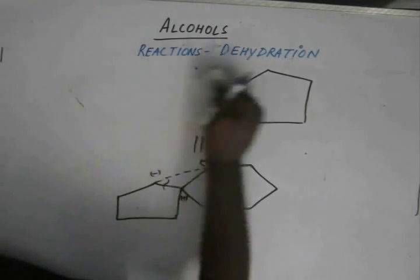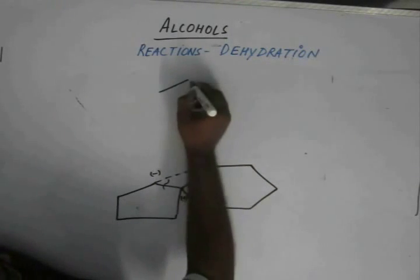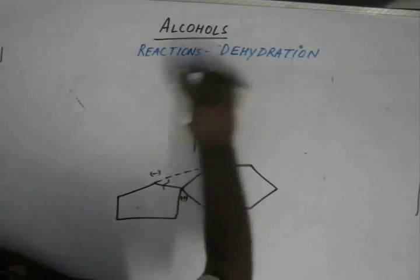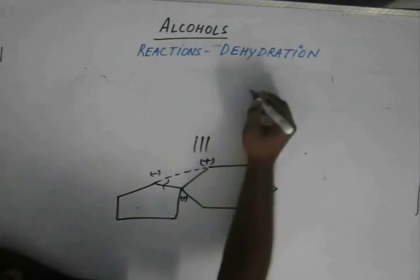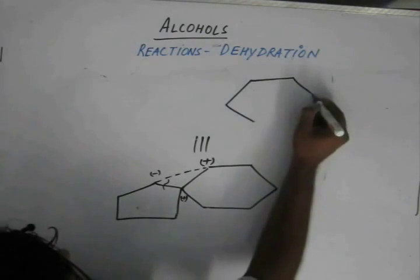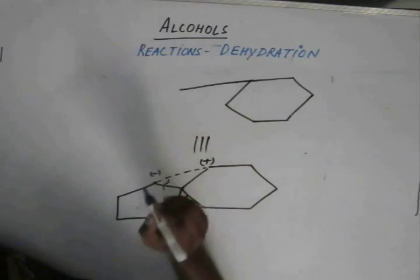Eventually we are left with a six-membered ring. The structure now resembles somewhat like this.